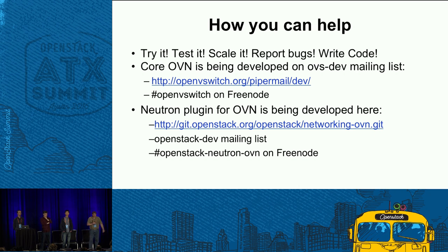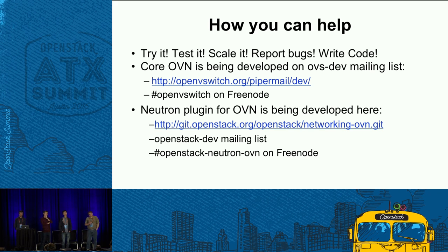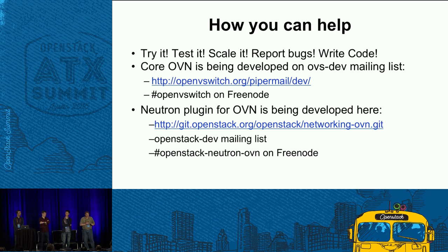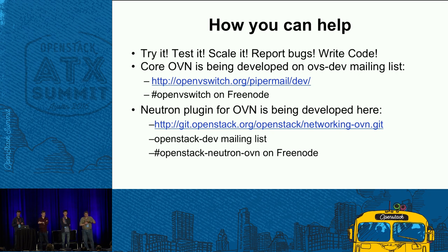Where it really complicates things is when we try to drive new features into the upper-level API — for example, pushing for a security group logging capability. Then all of a sudden all these networking alternatives don't support it or they break. In that case, what you're worried about is the reference implementations — Linux Bridge and OVS. Something like OVN, being in the networking-OVN project, it's up to the networking-OVN people to make it work once it appears in core Neutron.